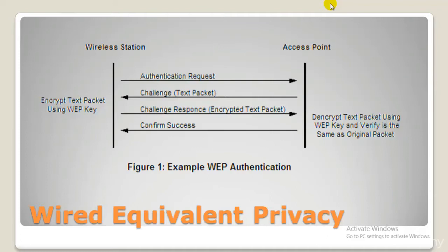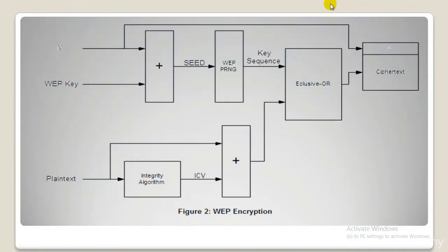Despite revisions to the algorithms and increased key size, numerous security flaws were discovered in the WEP standard. As computing power increased, it became easier and easier to exploit them. As early as 2005, the FBI gave a public demonstration in an effort to increase awareness of WEP encryption vulnerabilities. WEP is not commonly used much these days. Despite various improvements, workarounds, and other attempts to shore up the WEP system, it remains highly vulnerable. Systems that rely on WEP should be upgraded or replaced. The Wi-Fi Alliance officially retired WEP in 2004.